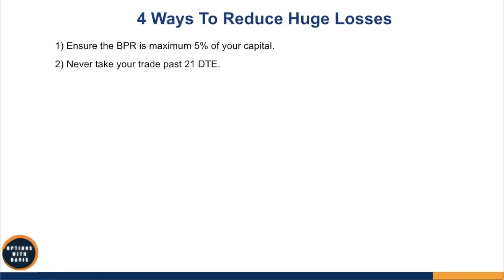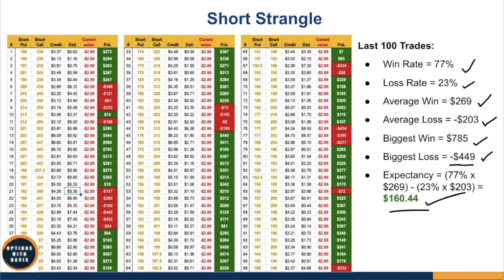Next, never take your trade past the 21 days to expiration mark, because that's when the trade can start to have massive losses — it could get into a very big loss if you go all the way close to expiration. So as much as possible, never take your trade past 21 days to expiration. Even if it's a loss at that point, you can choose to manage it or just take a loss and put on the next trade. Remember, this is all a probability game.